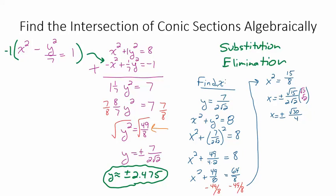All right, so what did we learn here? Well, we learned x could be the square root of 30 over 4, and y would be 7 over 2 root 2. So there's two of our intersection points. Now, that's all done over here, letting y be positive 7 over 2 root 2.